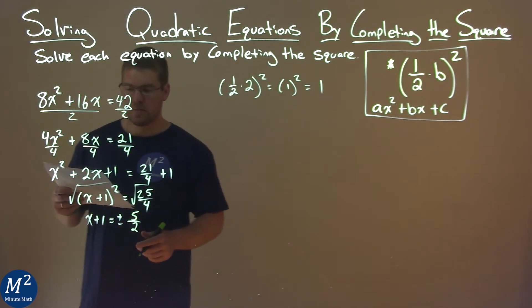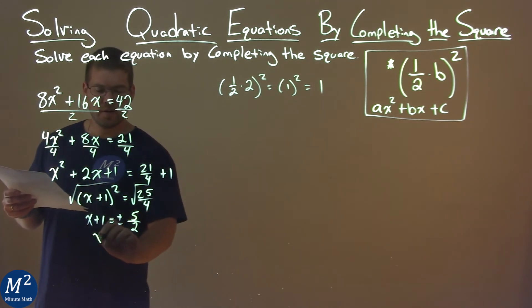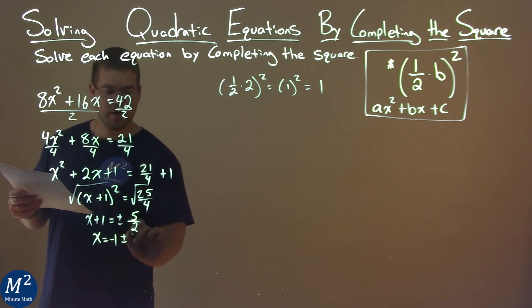So we have x plus 1 equals plus or minus 5 halves. Subtract 1 from both sides, and you have x equals negative 1 plus or minus 5 halves.